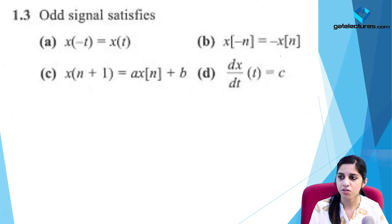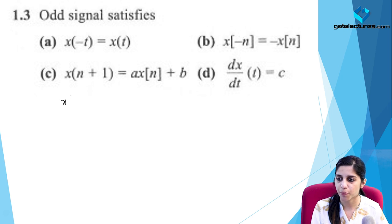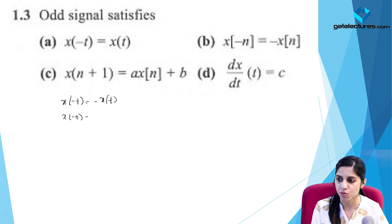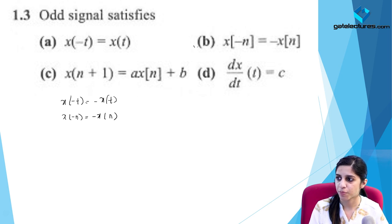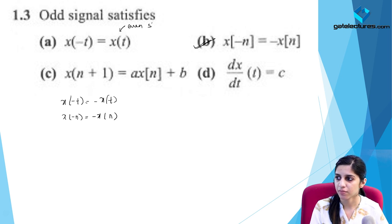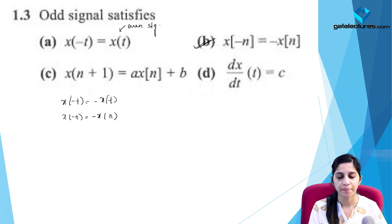The next question asks about the odd signal. For a signal to be odd, the property is x(-t) = -x(t) or in discrete time x(-n) = -x(n). Going through the options, the correct option is B. Option A represents an even signal.